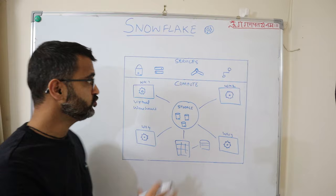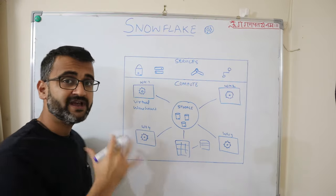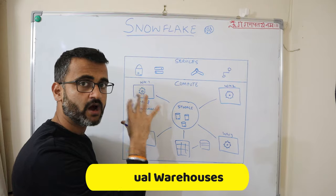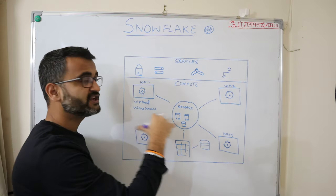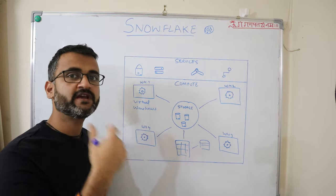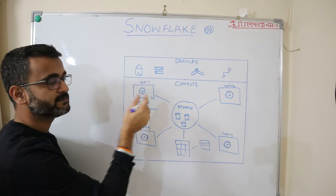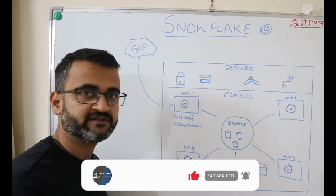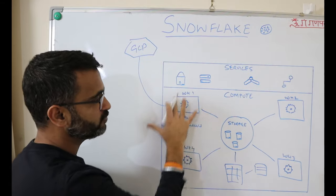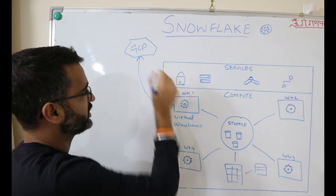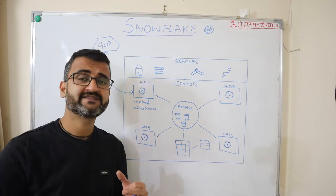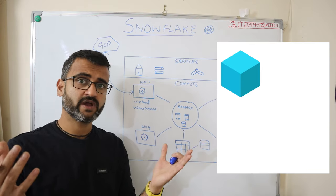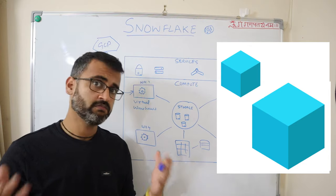On top of it you have your compute layer. This compute layer is the unique feature of Snowflake where you create what we call virtual warehouses. These virtual warehouses are connected to the specific cloud platform where Snowflake is deployed — for example, if Snowflake is deployed on GCP, it connects to a GCP compute instance. Your virtual warehouses can scale up and scale down based on need — you can have a very small or a very large virtual warehouse, and you can scale on demand as your needs change.